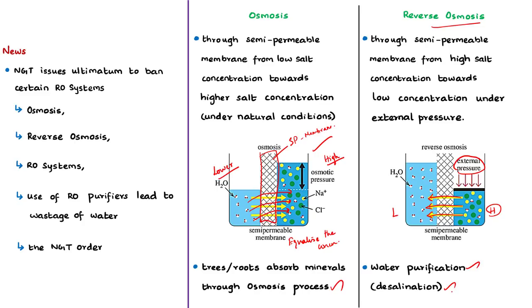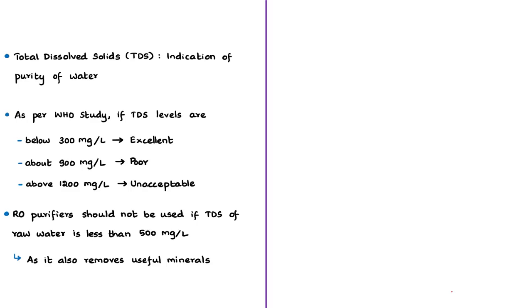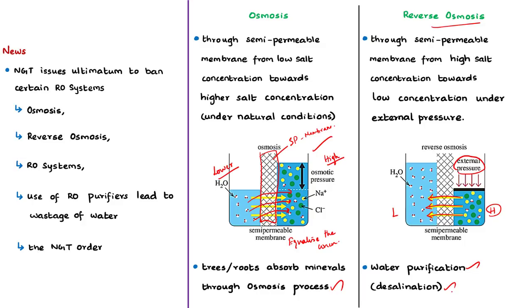The main purpose of using the reverse osmosis process is to purify the water. Reverse osmosis is also used for desalination — there are two desalination plants set up in Chennai using this process. All systems based on this process are known as reverse osmosis systems. Note that the quality of the semi-permeable membrane determines the purity of the RO system, and the price of RO purifiers is directly related to the quality of the membrane used. If the system is costly, it means the quality of the membrane is good.